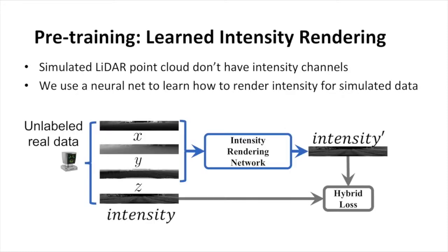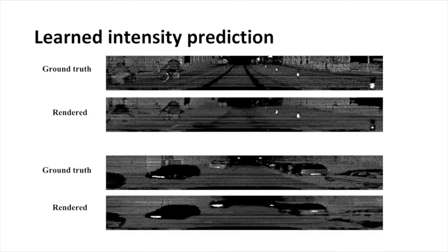Simulated LiDAR point clouds don't contain intensity. So we use a neural network to learn how to render intensities for the simulated data. Here are some examples.